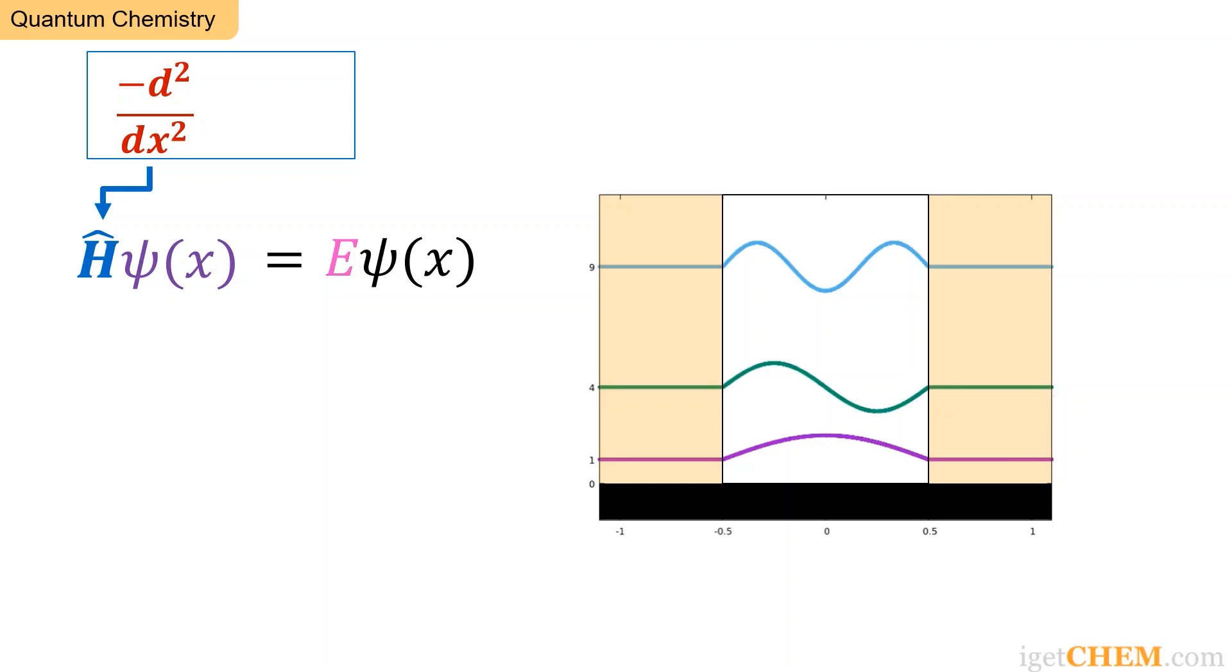In quantum chemistry, this is called the particle-in-a-box problem, and this is the simplest example of quantum confinement.